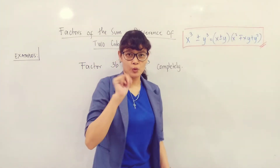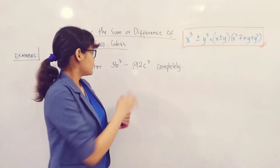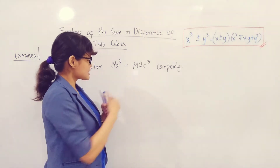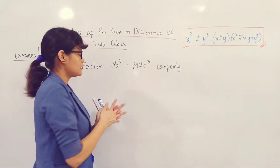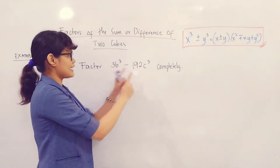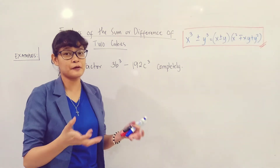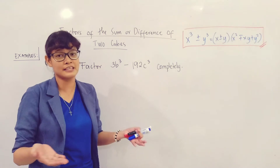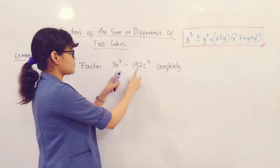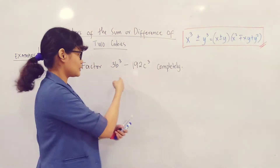Let's work on example number 2: factor 3b cubed minus 192c cubed completely. Let's check if this is DTC. It is a binomial with a minus sign. Now check if the terms are perfect cubes — b cubed and c cubed are both perfect cubes because of their exponents. But 3 and 192 are not perfect cubes by themselves. However, don't forget: whenever you factor any polynomial, first check for a common monomial factor.